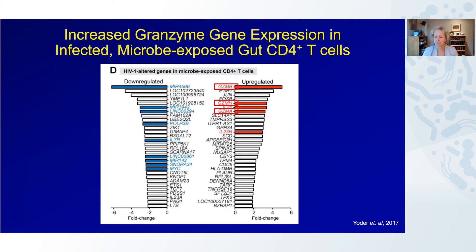An interesting finding from this study was that in those CD4 T cells that were HIV-infected but also exposed to microbes, there was a marked upregulation of granzyme genes. What I'm showing you here is a figure from that paper with downregulated genes on the left, upregulated genes on the right, and in red I want to draw your attention to granzyme B, granzyme H, and granzyme A genes — they were all upregulated in these CD4 T cells exposed to bacteria and HIV-infected simultaneously.